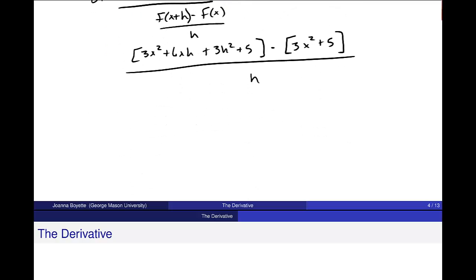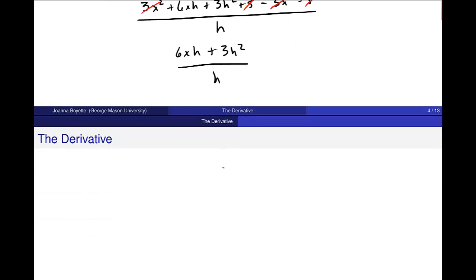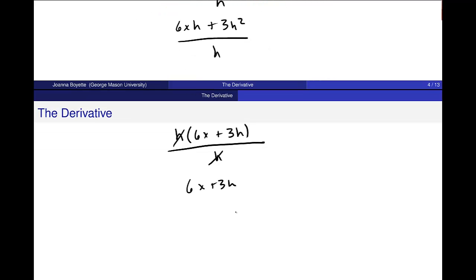I'm going to go ahead and simplify that. You'll see when I get rid of these brackets that a lot of this cancels. So I get the 3x squareds to cancel and 5s to cancel. And I think I'm left with 6xh plus 3h squared over h. So I think we can go down and you can see. If I factor out an h from this 6xh and from the 3h squared, the h's in my numerator and denominator will cancel. And I'm left with 6x plus 3h.